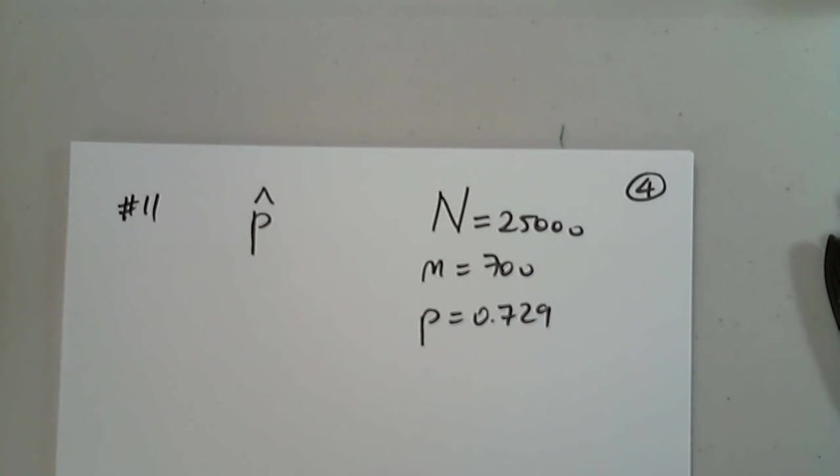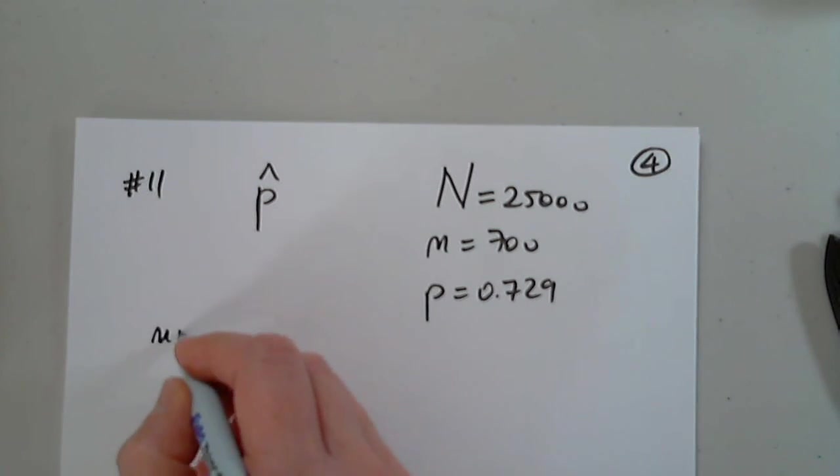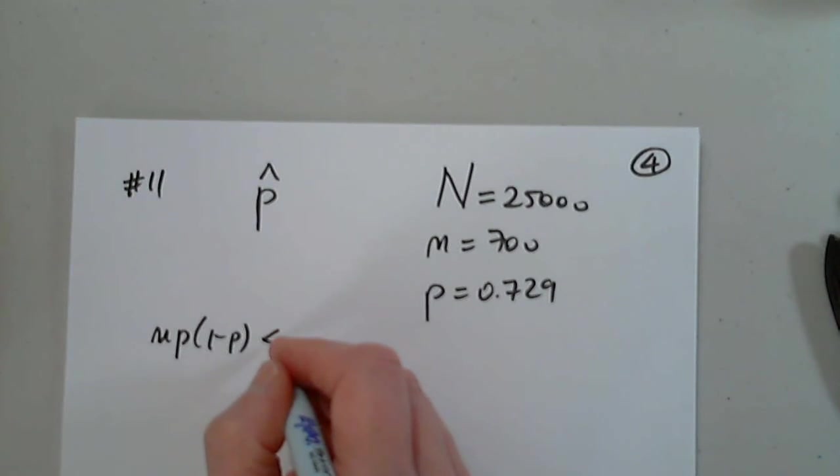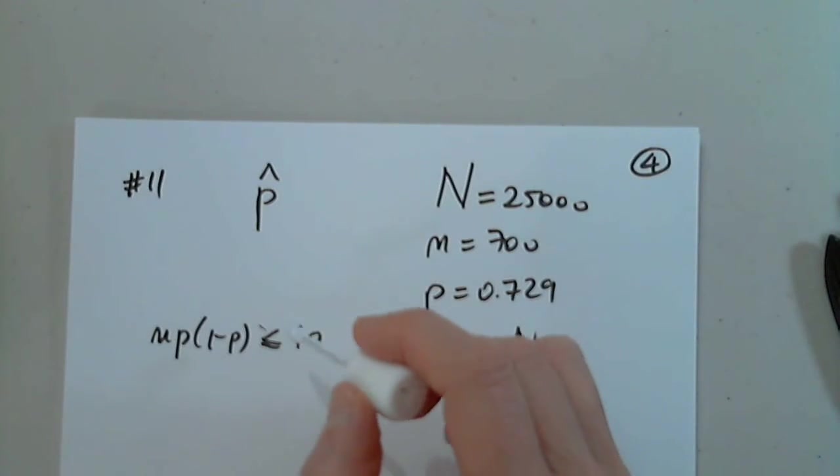Now remember, there are a few conditions here. One condition is that NP times (1-p) has to be greater than or equal to 10. And n has to be less than or equal to 0.05 of N, so this has to be greater than 10. So there are two conditions here that we have to check.